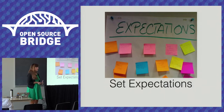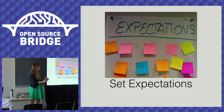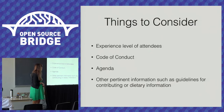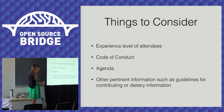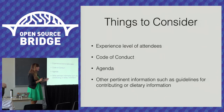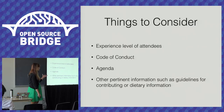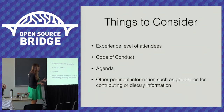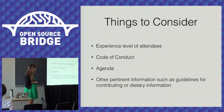Setting expectations is really important. You don't want a beginner user showing up at an advanced-level event — nobody's happy. Things we consider at Puppet: the experience level of attendees, our code of conduct, the agenda so people know where to be and what's happening, any dietary or accessibility information, and guidelines for contributions that we share.